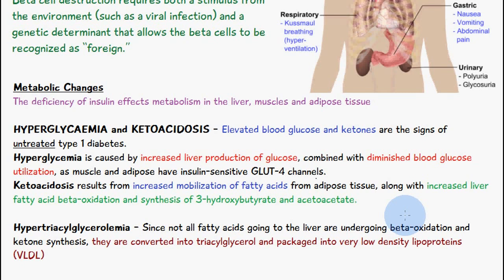We also have ketoacidosis because there is increased mobilization of fatty acids from the adipose tissue — the cells are starving, they're not getting their glucose. We have increased mobilization of these fatty acids from adipose tissue, increased liver fatty acid beta oxidation, and synthesis of 3-hydroxybutyrate and acetoacetate, which are both ketones — so we have ketogenesis occurring here.